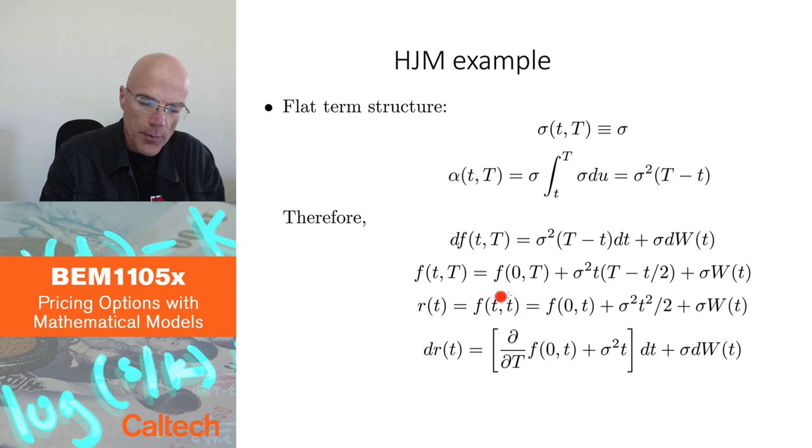Let's see what it is. So instead of capital T here, I will put small t. So I get f(0,t), plus sigma squared here, t, small t minus t over 2 is t over 2, times this t, it's going to be t squared over 2, and then plus sigma W(t).